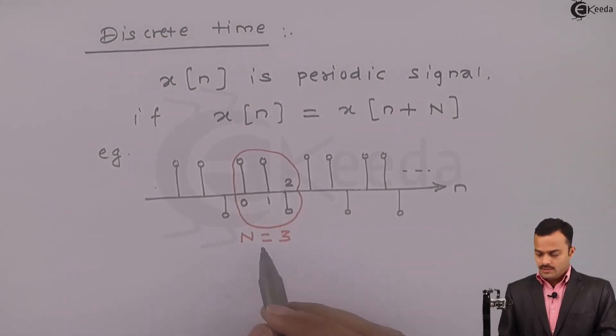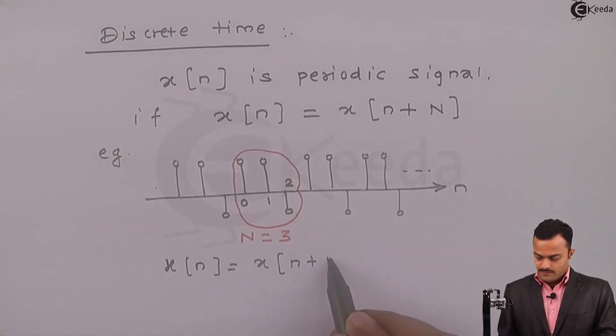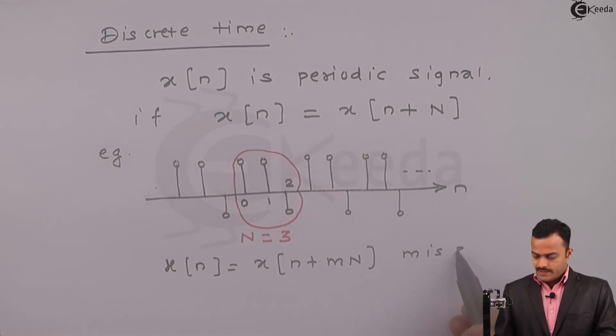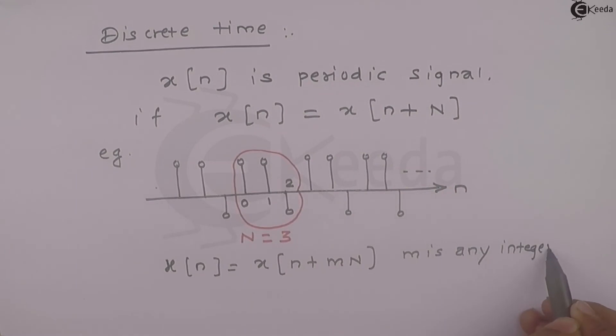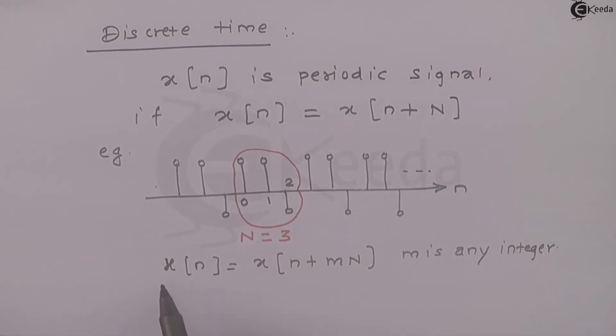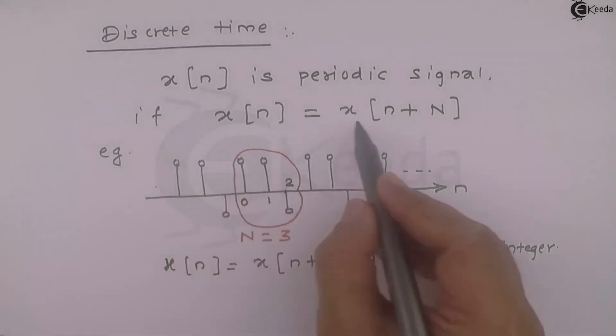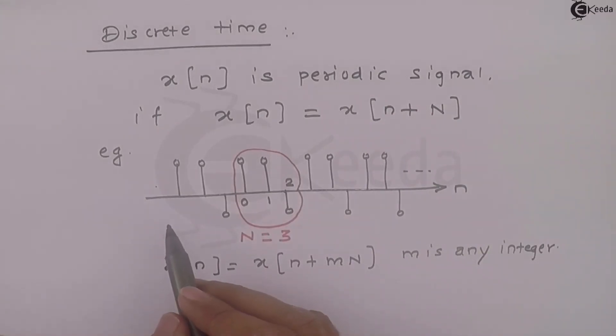So here also I can say x(n) is periodic for x(n plus m into N), and m is any integer. If this statement does not hold true, that signal is called an aperiodic signal.